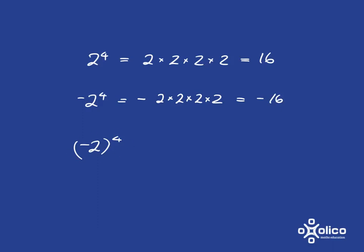This one, however, is very different, because what you've got is a negative two that's being raised to the power of four — it's the whole thing raised to the power of four. So you get negative two times negative two times negative two times negative two. Negative times negative is positive, then positive times negative is negative, then negative times negative is positive. And two times two times two times two is 16, so we get positive 16.